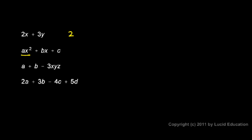In this one, I have three things: the ax squared, the bx, and the c. So that expression has three terms. And so does the next one — the a, the b, and the negative 3xyz. There are three terms in that expression. And this last one has four terms: 2a is a term, 3b is a term, negative 4c is a term, and 5d is a term. So there are four terms in that expression.